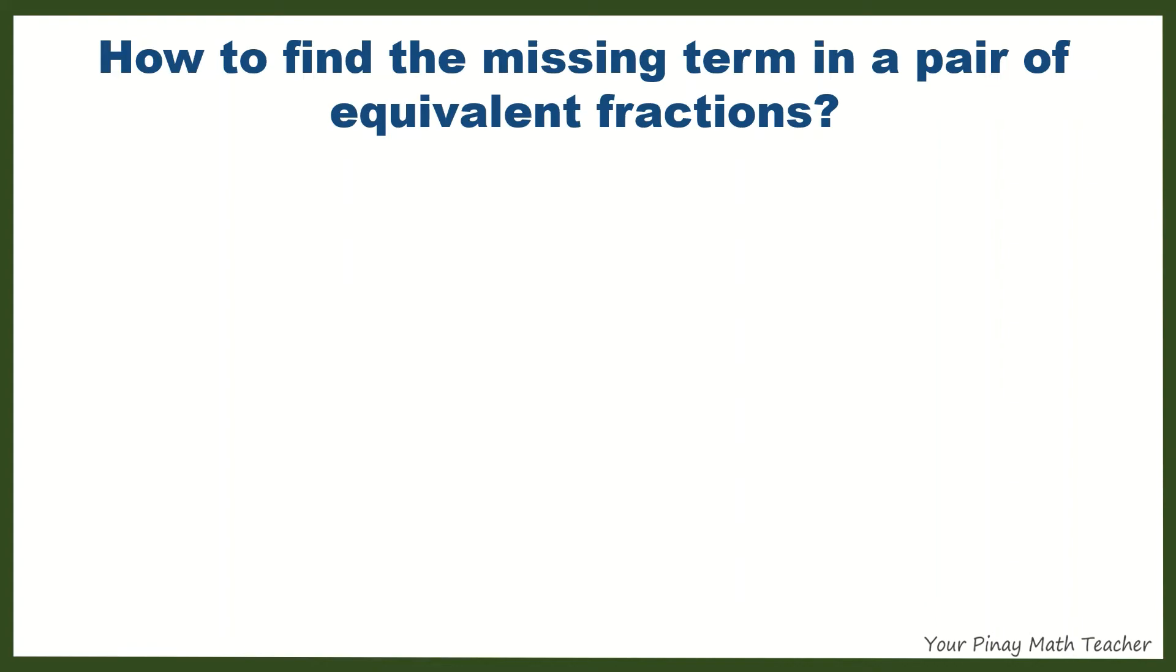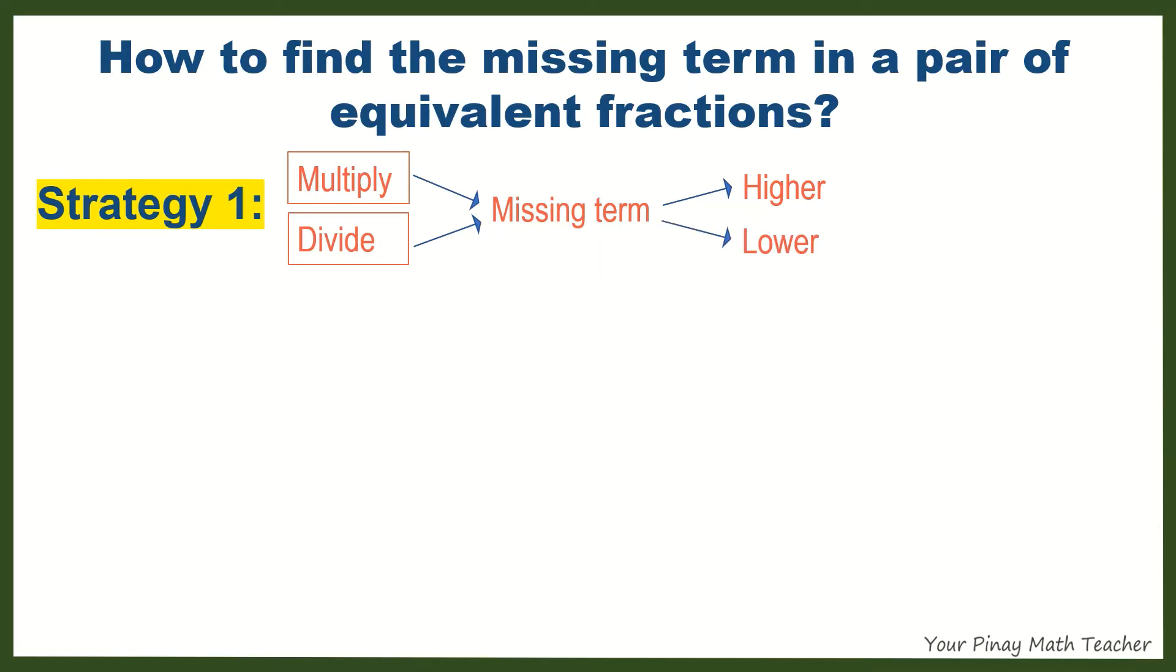How to find the missing term in a pair of equivalent fractions? Strategy 1: Multiply both numerator and denominator by the same number if the missing term is in its higher term. Divide if the missing term is in its lower term.